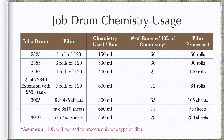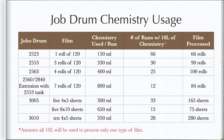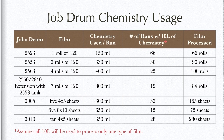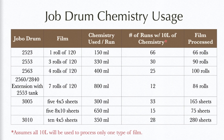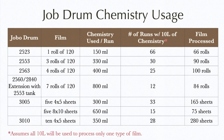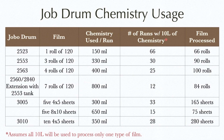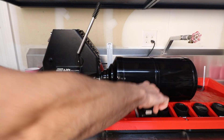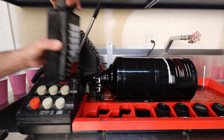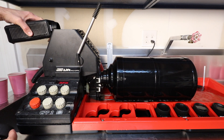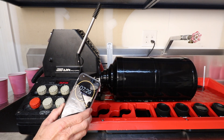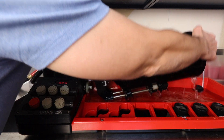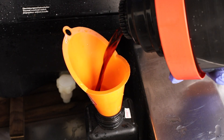Jobo produced many different developing tanks over the years. These are the ones that I own and the corresponding amount of chemistry that I use per run of development. You'll also see the total amount of film you can process if you only used one type of drum per the entire 10 liters of chemistry. Once your drum has been heated for five minutes, the development process is simple — it's just a matter of pouring your chemicals into the Jobo, processing each step for the amount of time shown earlier, and dumping out your used chemistry for disposal according to your local regulations.